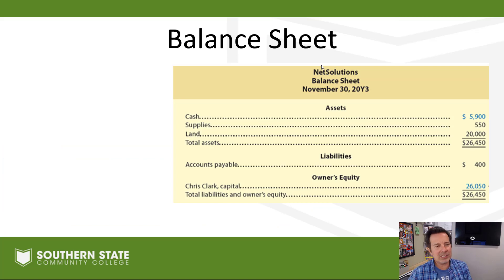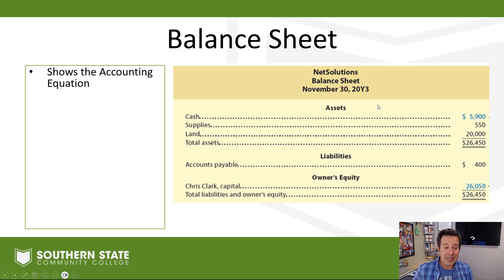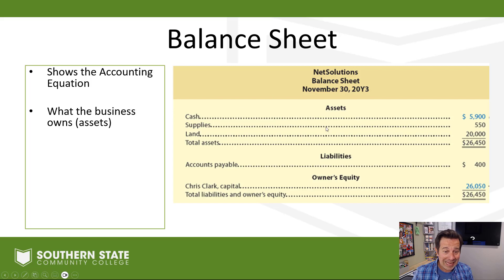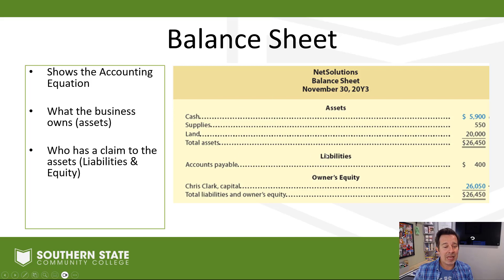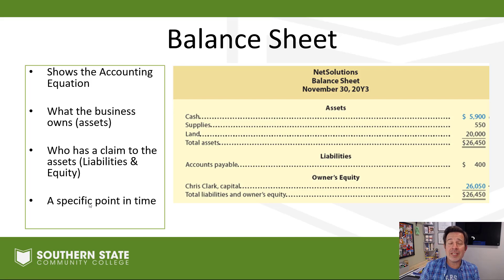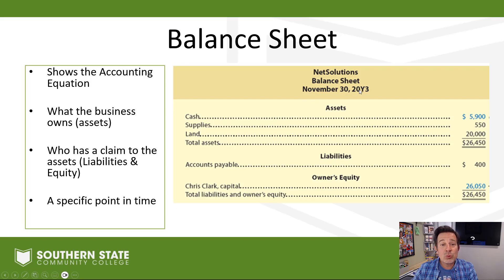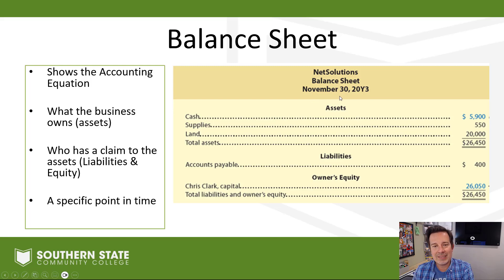So what about the balance sheet? That's our third financial statement — the third one we make. The balance sheet is going to show the accounting equation: assets equal liabilities plus equity. It tells us what the business owns — assets — and who has a claim to those assets: a creditor or the owner. And it's going to be shown at a specific point in time. The income statement and statement of equity cover a period of time — a month, a quarter. The balance sheet is done at a specific point in time — one day, November 30th. Here's what we own and who has a claim to it as of November 30th, as of this moment in time.